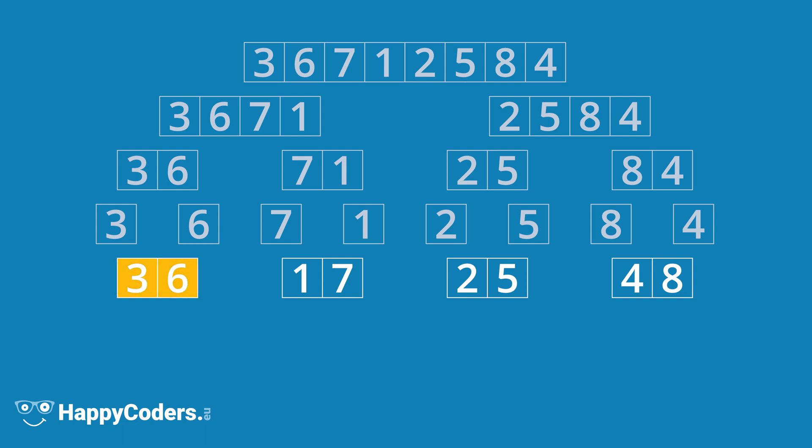We continue with the three, six and the one, seven. We again take the smallest element from the beginning of the two partial lists. That is first the one, as it is smaller than three. Then the three, as it is smaller than seven. Then the six, as it is also smaller than seven. And finally the seven, as the other partial list is empty. In the same way, we merge the two, five and the four, eight.